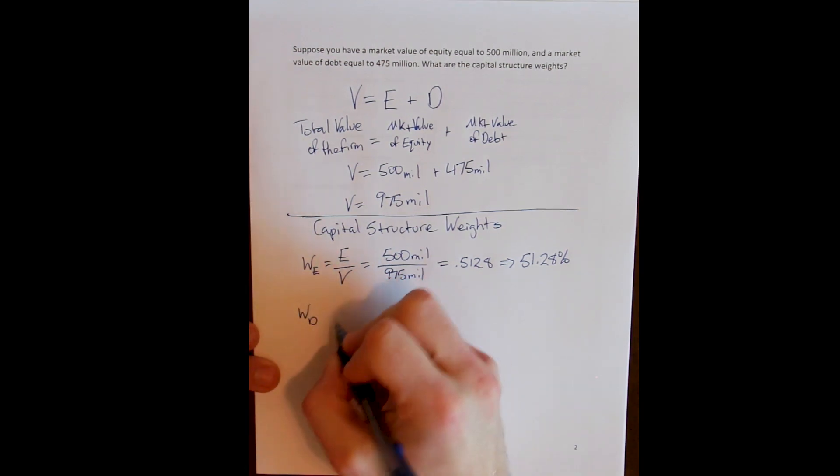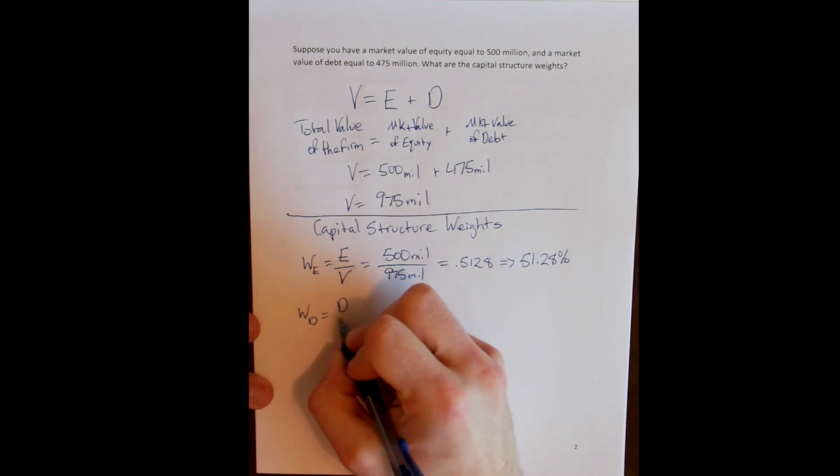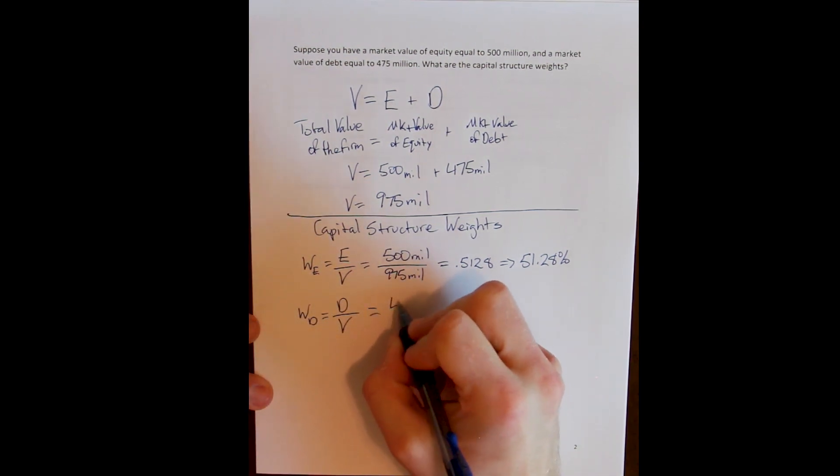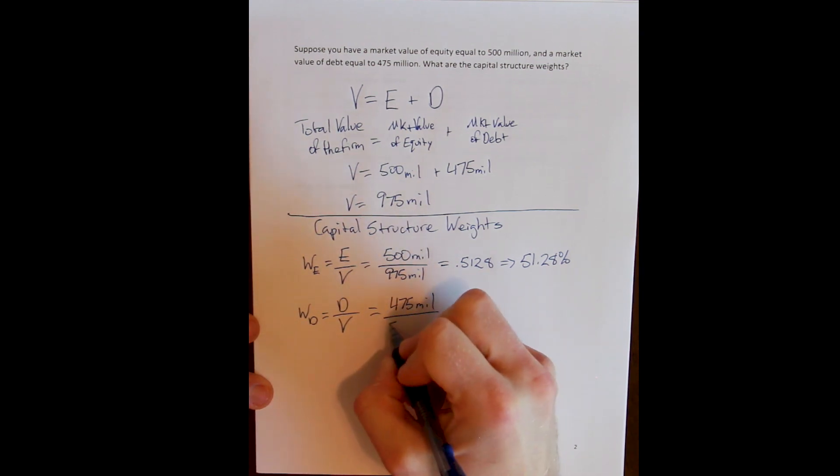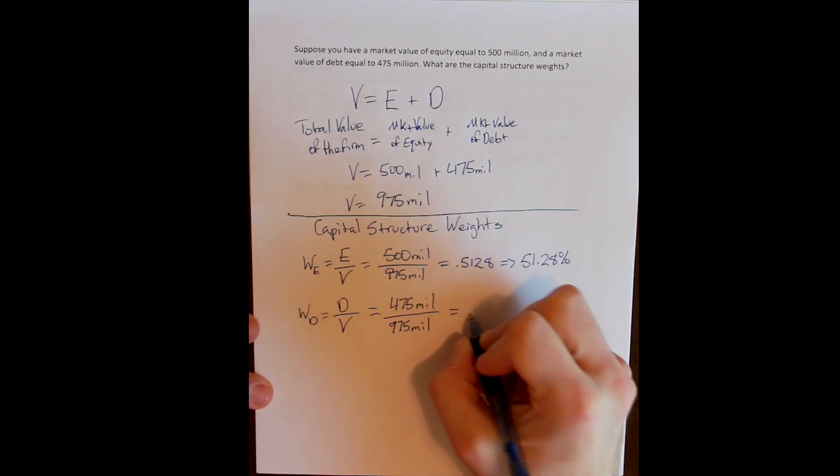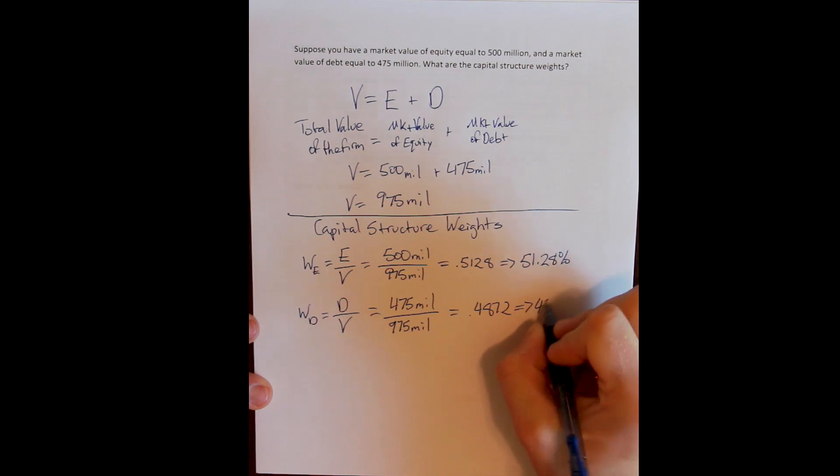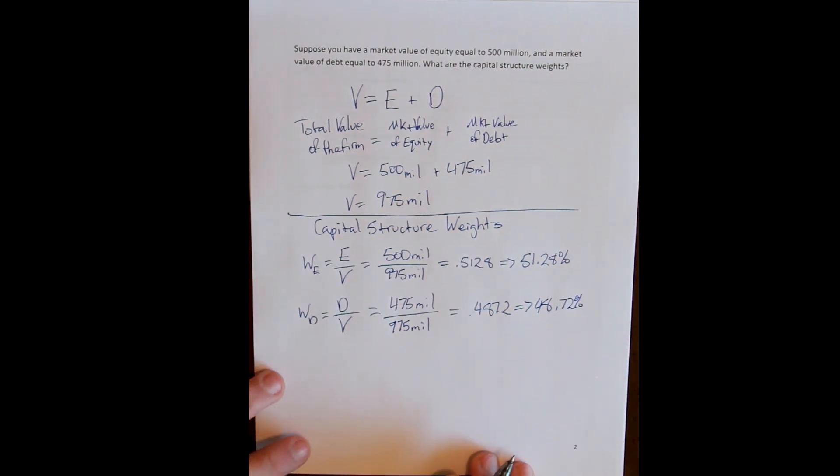The weight of the firm that has been financed using debt is the market value of debt divided by the market value of the firm, which is 475 million divided by 975 million or 48.72%.